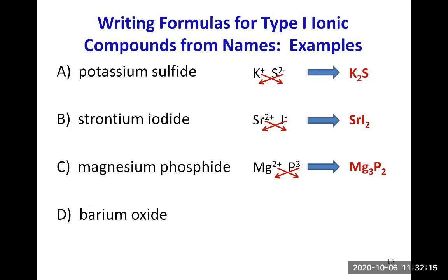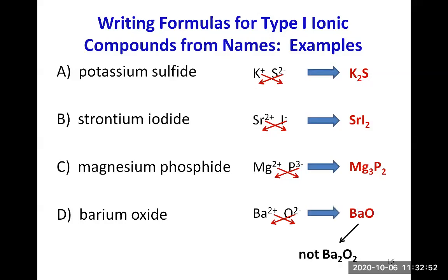Barium oxide. Barium is Ba, from group 2A, an alkaline earth metal, so group 2A means it always makes a 2+ ion. Oxide is from oxygen in group 6A; the oxide ion has 2 negative charges because 6 minus 8 is negative 2. So we have Ba²⁺ and O²⁻. If you do the crisscross trick you would get Ba₂O₂, but since the 2 positive charges cancel the 2 negative charges, one of each ion makes a neutral formula. So always simplify the formula to get the smallest ratio of whole numbers — it's not Ba₂O₂ but BaO.